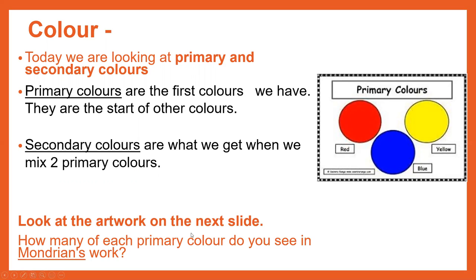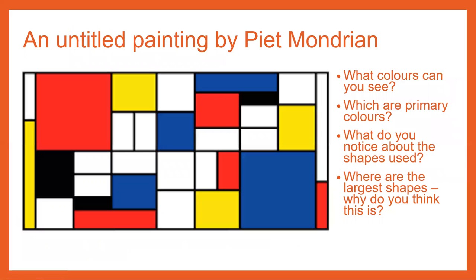We're going to look at the artwork on the next slide and I want you to have a think. How many of each primary colour do you see in Mondrian's work? Have a look at it here. While you're looking at it, think about these questions: What colours can you see? Which are primary colours? What do you notice about the shapes used? And where are the largest shapes, and why do you think this is?